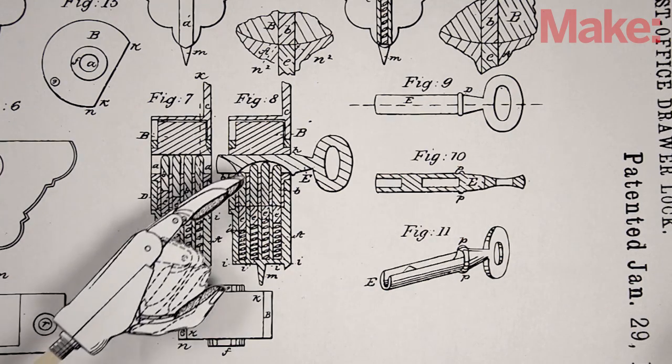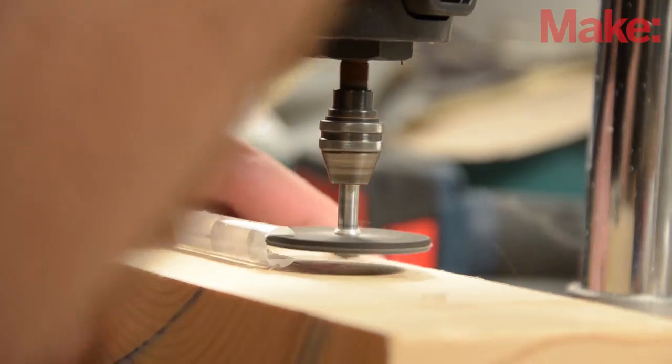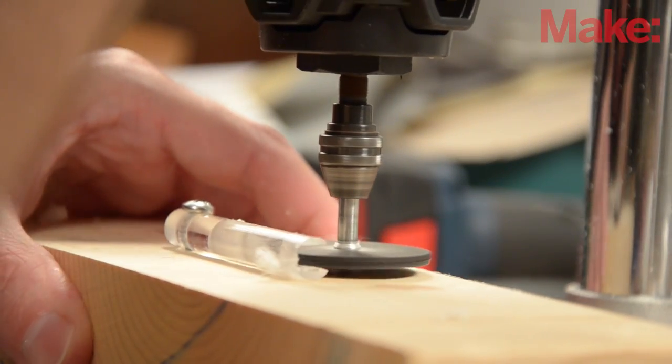Cutting a groove in a cylindrical key is more complicated than modern flat keys, but a narrow grinding wheel and a rotary tool makes it go quickly.